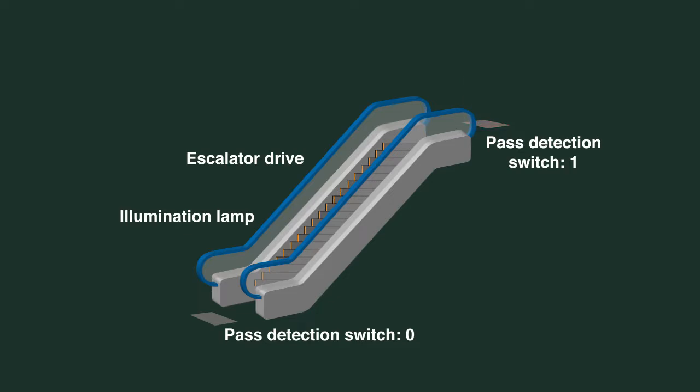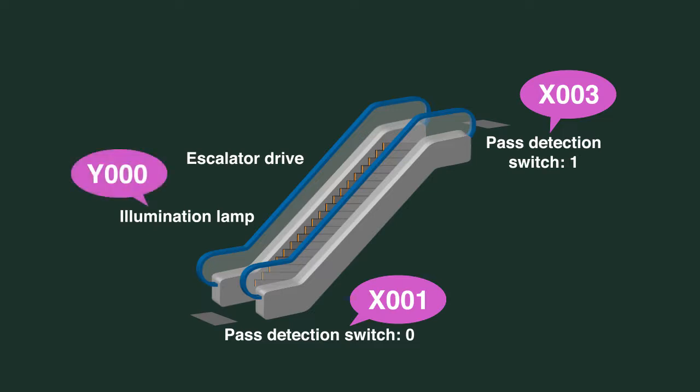So on the input side, we have x1, which is the entrance sensor, and x3, which is the exit sensor. On the output side, we have y0, which is the lamp, and y3, which is a motor that drives the escalator.